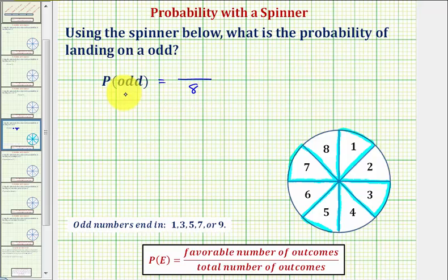Which means the probability of spinning an odd is four-eighths, but this does simplify. There's a common factor of four. Four-eighths simplifies to one-half.